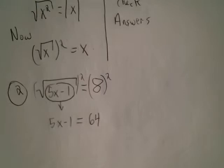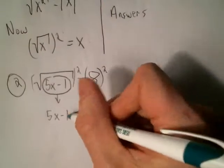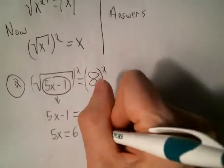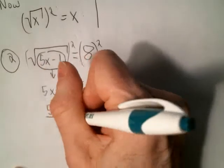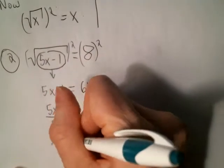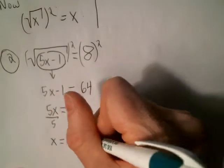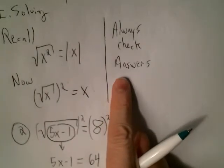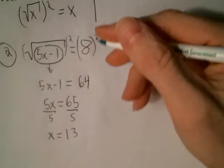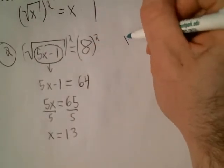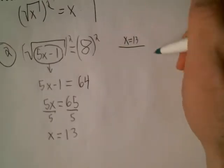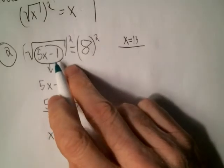Now that you've gotten rid of the square root, it goes back to being an old-fashioned linear equation. We can solve this by isolating the variable term. Add 1 to both sides, then isolate the variable by dividing both sides by 5. That gives us x equals 13. And sadly, you always have to check your answers, so I'll do a check — is x equal to 13? You have to go back to the original equation.